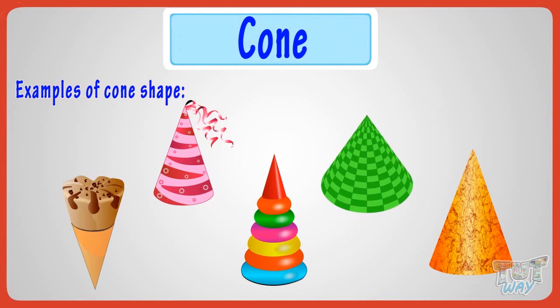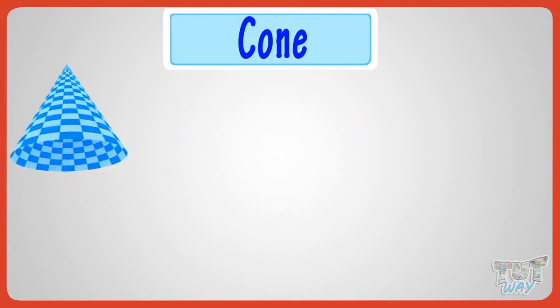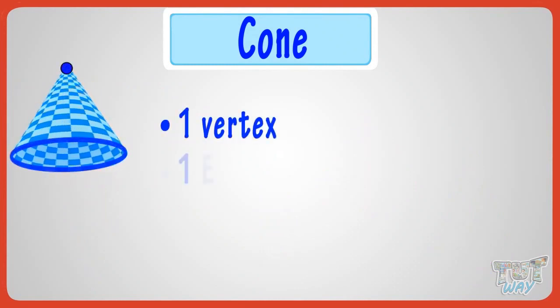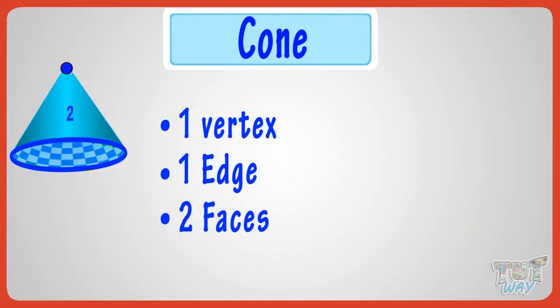So we have learned that a cone is a 3D object with one vertex, one edge, and two faces. Good!